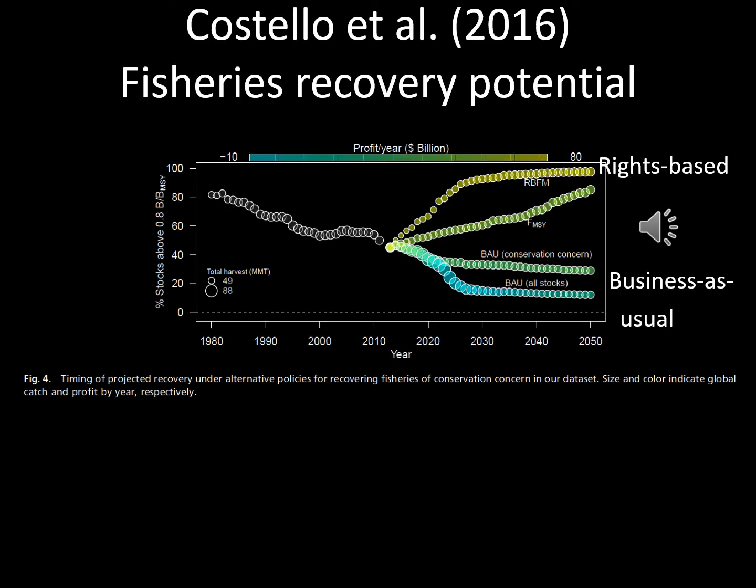Recent work has used similar models to estimate the restoration potential of global fisheries, where nearly 70% of worldwide fisheries would benefit from reduced catch through increased fish stocks. Costello and colleagues estimate that the global catch could be increased relative to business as usual by 16 million metric tons and that recovery sets in quickly, with the median fishery reaching recovery targets within 10 years.